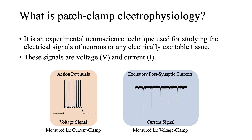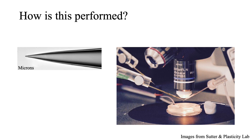To understand how a neuroscientist acquires these signals, let's briefly talk about how patch clamp is performed. It all starts with a tiny glass pipette pictured here on the left. The scale of this image is in microns — it is really small. The electrophysiology recordings are carried out by taking this pipette, called the recording electrode, and mounting it under a microscope and above a sample of interest. This could be a slice of brain tissue, cultured neurons, and various other preparations.